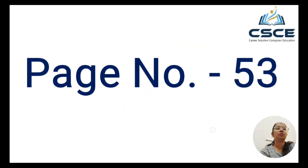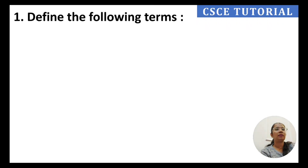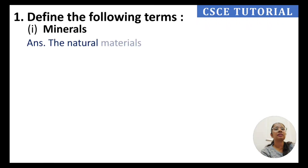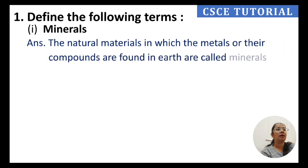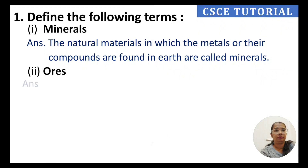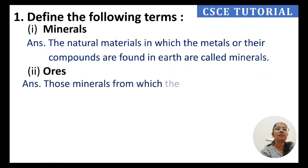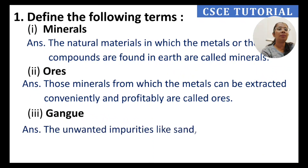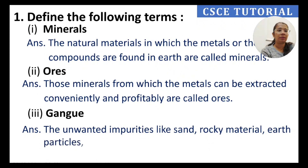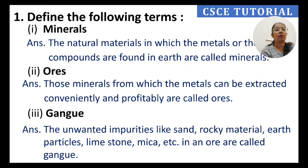Now we have questions on page 53. Question 1 asks to define the following terms. Minerals: the natural materials in which metals or their compounds are found in the earth are called minerals. Ores: those minerals from which metals can be extracted conveniently and profitably are called ores.